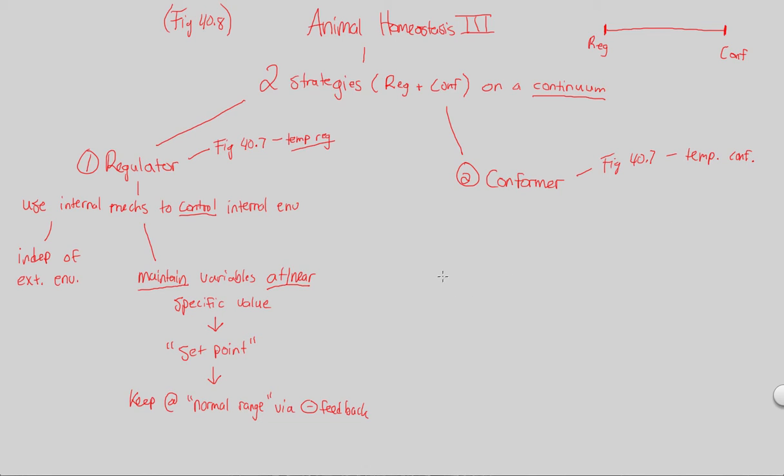What does it mean to be a conformer? A conformer is going to use the strategy that allows the internal environment, because remember that's where most homeostasis takes place, to vary. This is a big difference. You should be very clearly seeing something different. Control, maintain, at or near set point, normal range - this is a different idea altogether. It allows internal environment to vary, to change, to be different, with the external changes.